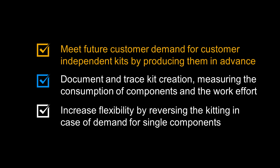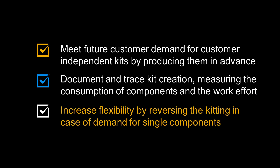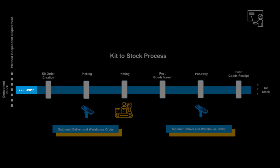Kit to stock enables you to meet future customer demand for customer independent kits by producing them in advance. Controlled by a VAS order, you can document and trace kit creation, measuring the consumption of components and the work effort. You can increase flexibility by reversing the kitting in case of demand for single components. Like the kit to order process, the kit to stock and reverse kitting process is controlled by a VAS order, which controls the process of bringing components from stock to the VAS workstation.